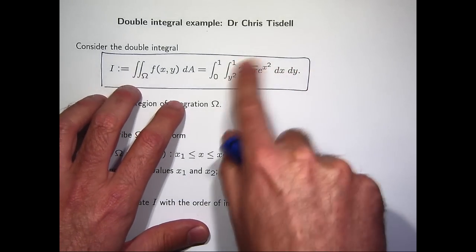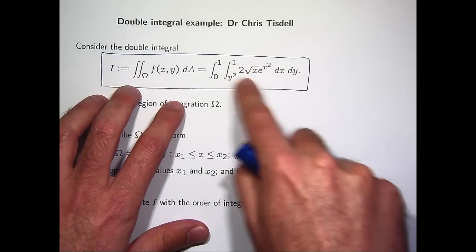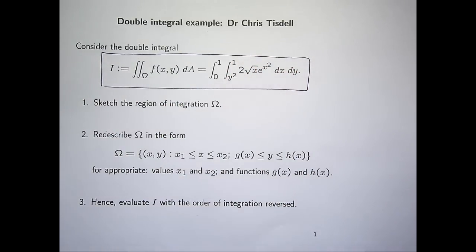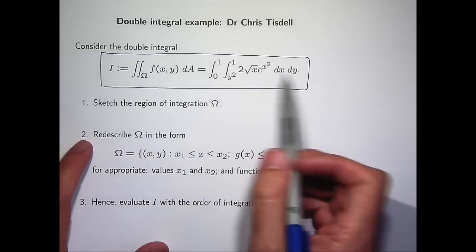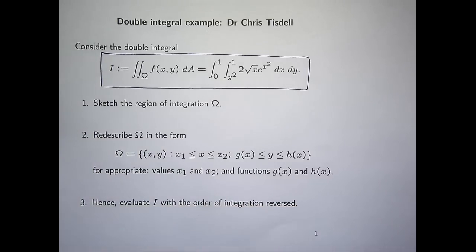So the idea here is to switch the order of integration. Instead of integrating this with respect to x, you'd be integrating it with respect to y. That's an easy integration. So that's what we're going to try to achieve. Once we reverse the order of integration, we can then evaluate it.